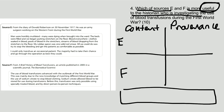So let's have a look at source E, which is from the diary of Oswald Robertson on the 30th of November 1917. He was an army surgeon working on the Western Front during the First World War. Well, this looks incredibly useful because he was there for real, so he was really doing blood transfusions.